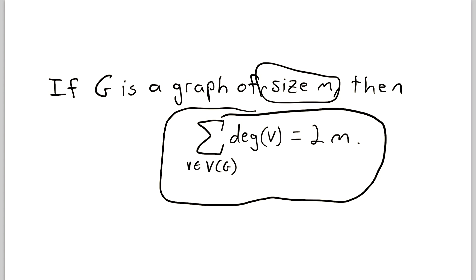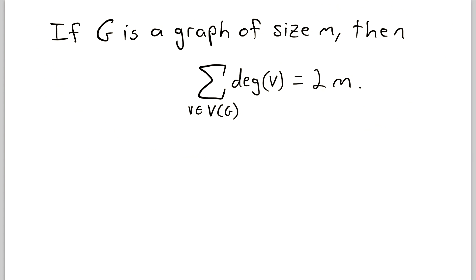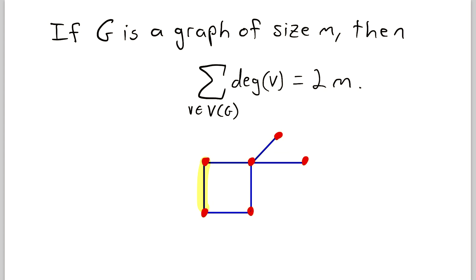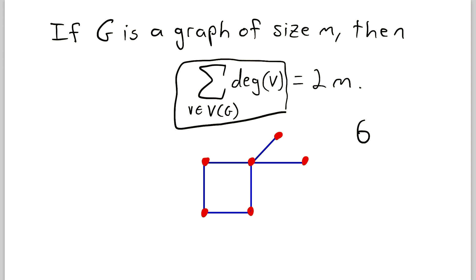So why is that true? Let's first take a quick peek at a simple example. Here's a fine looking graph. What's the size of this graph? We just have to count up the edges: 1, 2, 3, 4, 5, 6. There are 6 edges in this graph, so we know that its size is 6. This is the m in the first theorem — the graph has size 6. So if we add up the degrees of all of the vertices in this graph, we should get 2 times 6, which is 12.